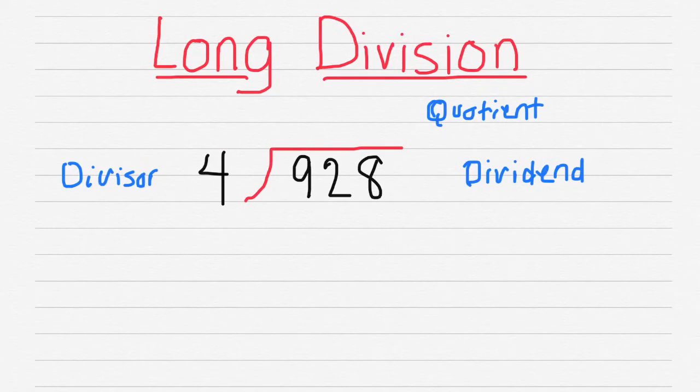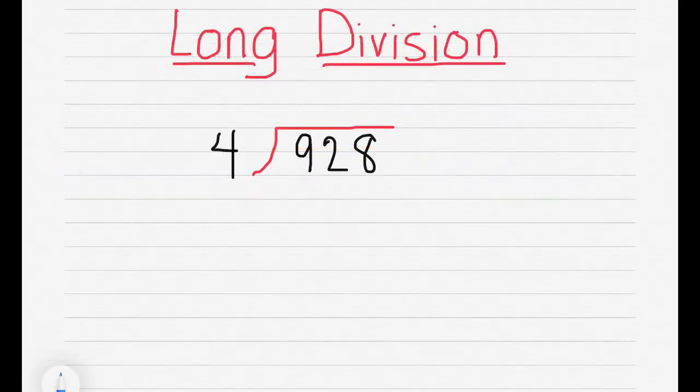Let's take a look at long division. In this case, my divisor would be 4, which is on the outside of the division symbol. Underneath is my dividend, which is 928. And my quotient would be the resulting answer. So let's solve.